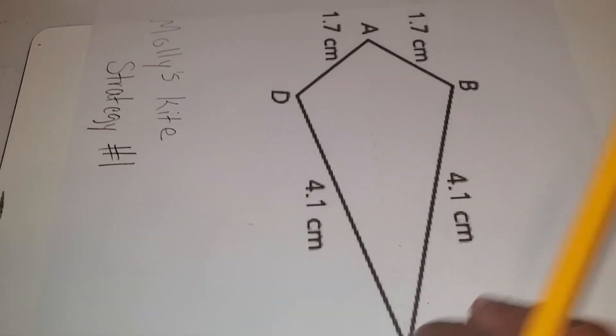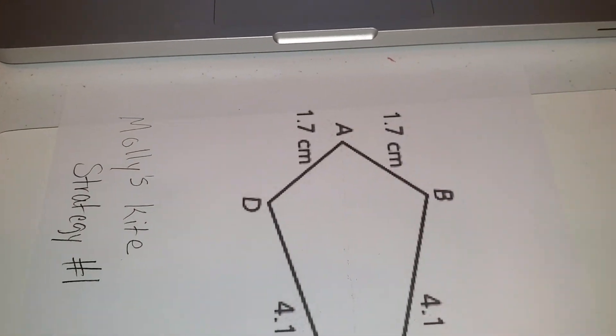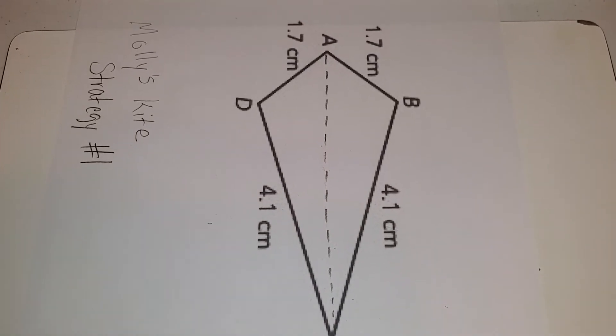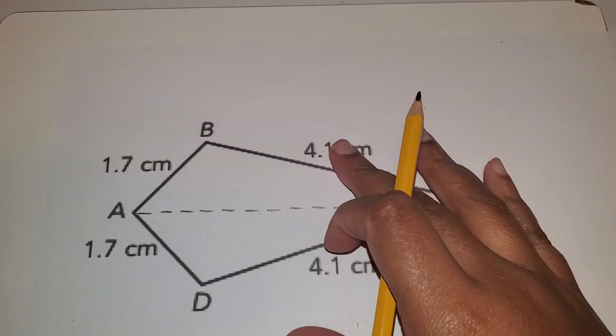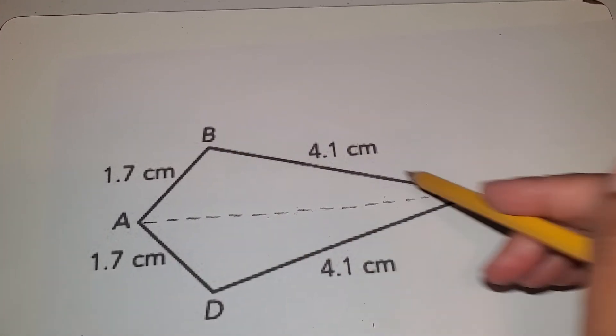So she decided to divide it like this. Do you recognize those two shapes? Yep. Molly changed hers into two triangles.